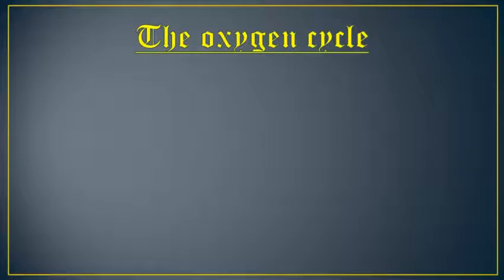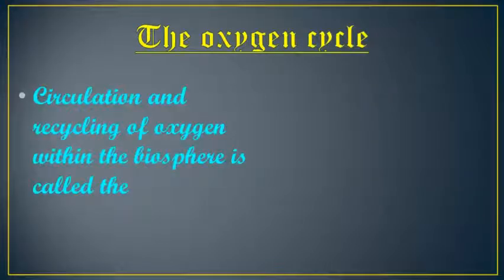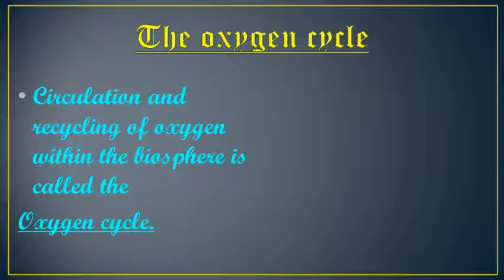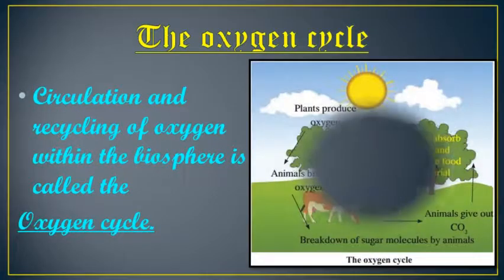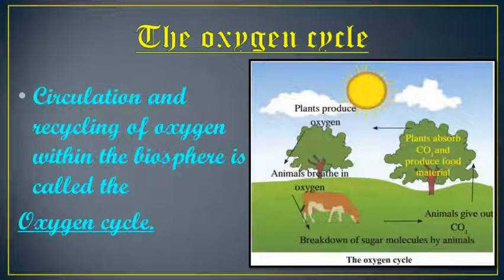The circulation and recycling of oxygen within the biosphere is called the oxygen cycle. The biosphere is a mixture of hydrosphere, lithosphere, and atmosphere in which plants and animals live. This cycle includes both biotic and abiotic components.